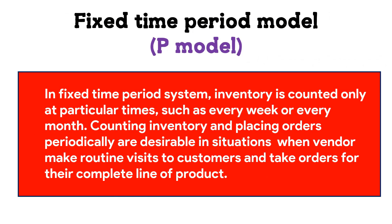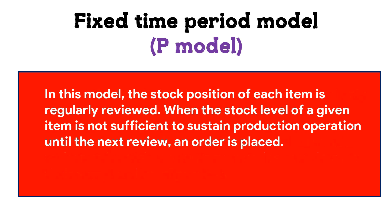In the fixed time period model or P model, inventory is counted only at particular times, such as every week or every month. Counting inventory and placing orders periodically is desirable when vendors make routine visits to customers and take orders for their complete line of products. The stock position of each item is regularly reviewed, and when the stock level is not sufficient to sustain production until the next review, an order is placed.